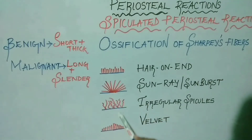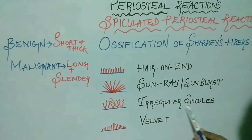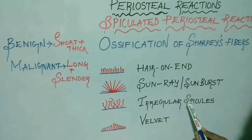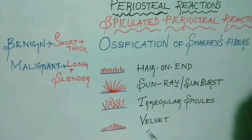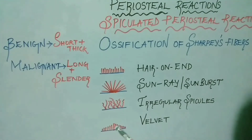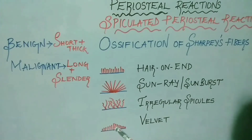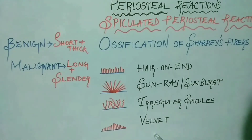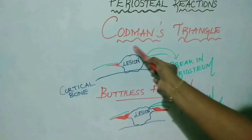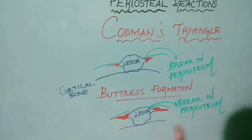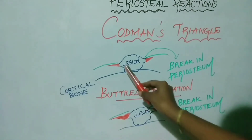In the irregular spicule pattern, spicules are seen in an unorganized manner in various directions. These irregular spicules can be noted in Ewing sarcoma and osteosarcoma. In the velvet pattern, spicules are uniform, fine, and short, sloped with a gradual reduction in height in each direction from the mid-zone region of the reaction. An example of the velvet pattern is osteosarcoma.